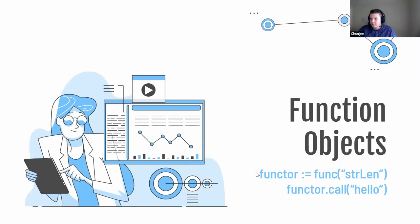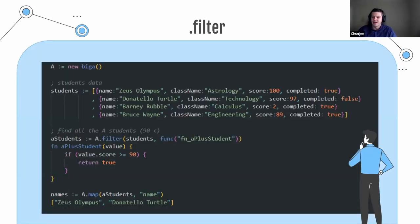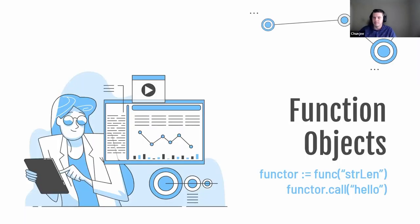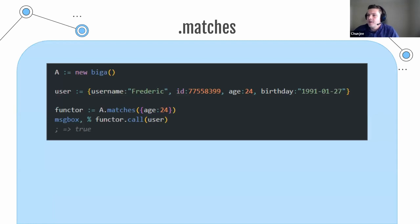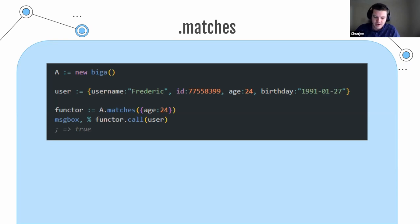Let's talk about function objects. Here's a plain vanilla AutoHotKey example where we make a variable called functor. It gets a function called string length. String length returns the length of the string as a number. When we call that functor on a string like hello, the return would be five.